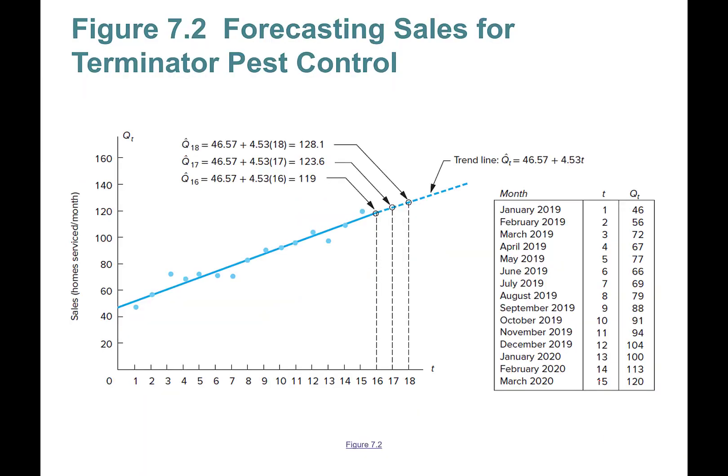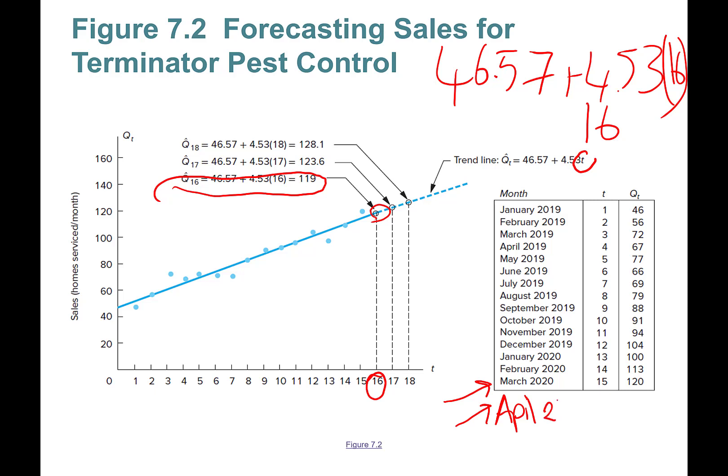This is period 16. Plug in 16 here: 46.57 plus 4.53 times 16. That is going to be the next value. This is your prediction or forecast of April. I found that April sales are going to be 119.